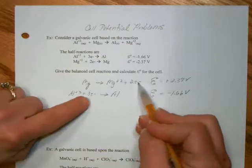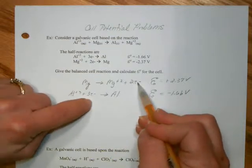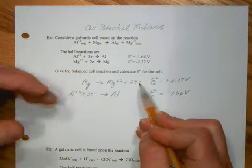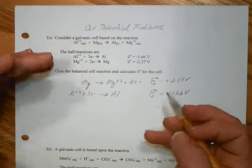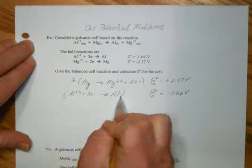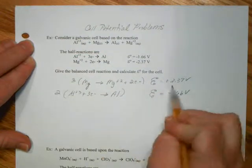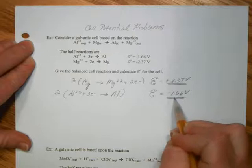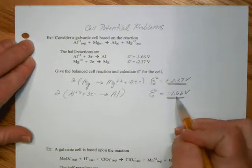However, my number of electrons taken does not equal the amount given off. So between three and two, we'd want a common factor to be six. So I need to multiply this through by three, and this through by two. But remember, the EMF values do not get multiplied because cell potential is an intensive property.